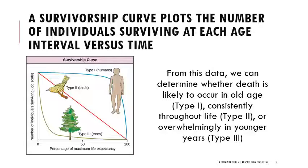Survivorship curves show three types. Type 1 means death is most likely to occur in very old age — individuals survive well until late in life, and parents put a lot of energy into raising offspring to maintain that high life expectancy. Birds are Type 2, meaning they're roughly equally likely to die at any point in their lifetime. Trees are Type 3, meaning they over-reproduce — they have a ton of offspring, but many die early. Think about how many seeds get eaten by birds or squirrels. Trees reproduce in very high numbers, but only some survive, germinate, and grow.